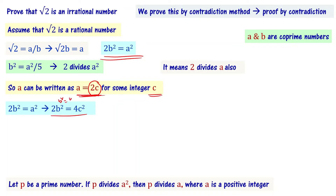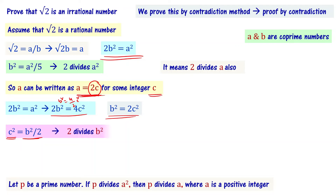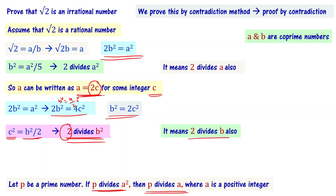Rearranging, B squared equals 4C squared divided by 2, which gives B squared equals 2C squared. This means 2 divides B squared. Applying the same theorem again — since 2 is a prime number and 2 divides B squared — 2 can also divide B.